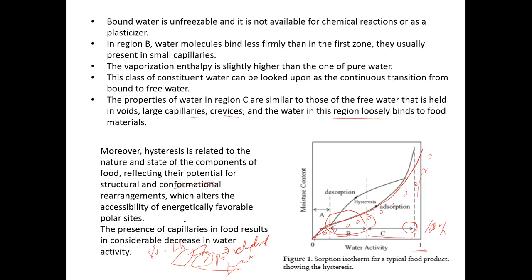This alters the accessibility of energetically favorable polar sites. If matured spinach leaves are dehydrated, the structure, nature, and bonding between molecules will be different compared to less mature leaves. This alters the accessibility of energetically favorable polar sites. The presence of capillaries in food results in a considerable decrease in water activity.